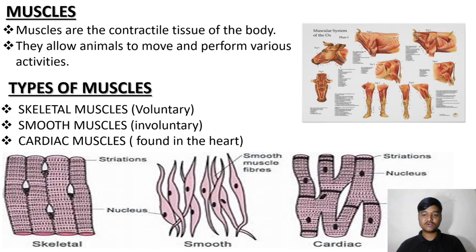Introduction: The musculoskeletal system is responsible for providing support, movement, and protection to the body of animals. Muscles are the contractile tissues of the body — they allow animals to move and perform various activities.